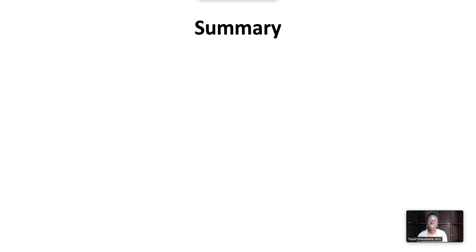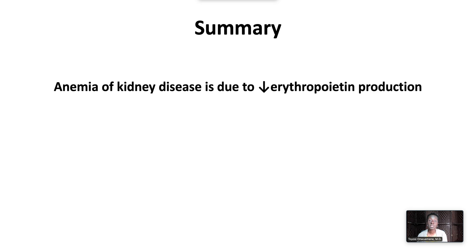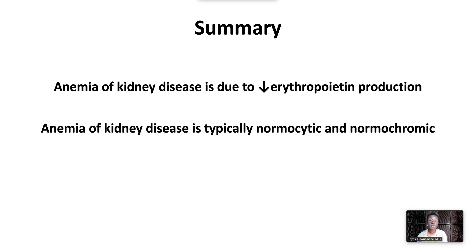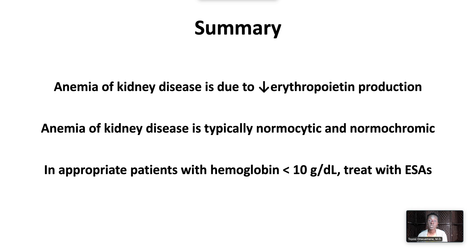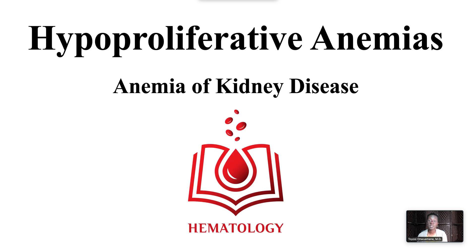In summary, anemia of kidney disease is due to decreased erythropoietin production. Anemia of kidney disease is typically normocytic and normochromic. In appropriate patients with hemoglobin less than 10, treat with erythropoietin stimulating agents. This ends our video, Hypoproliferative Anemias: Anemia of Kidney Disease.